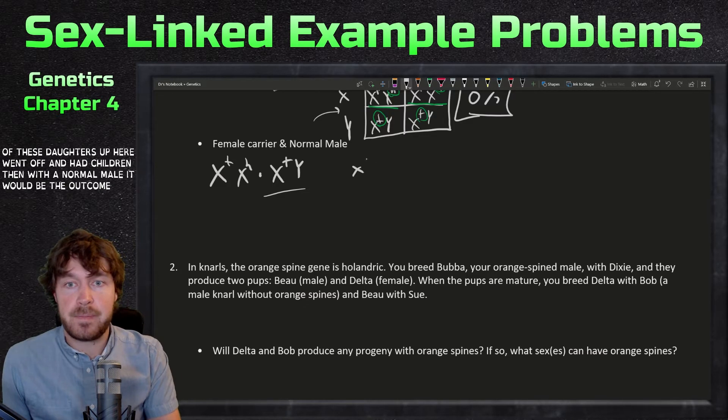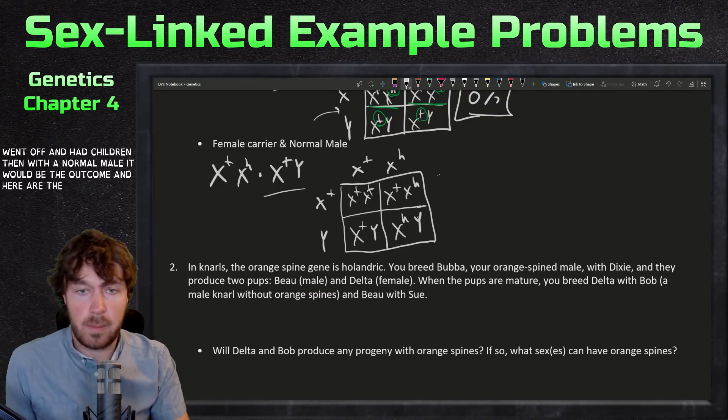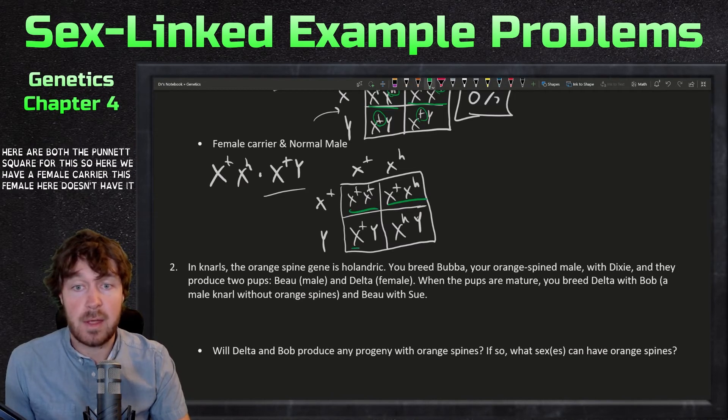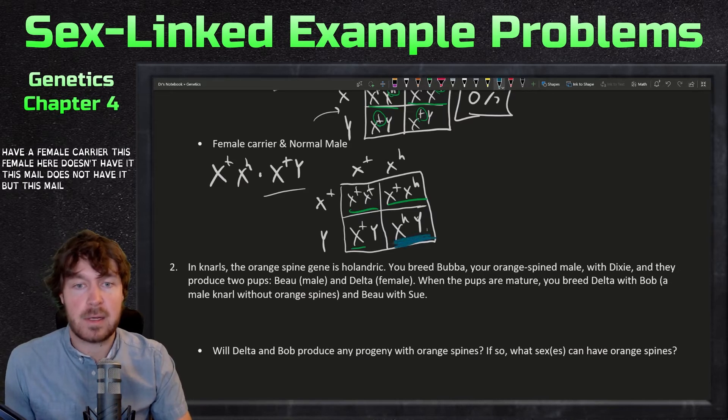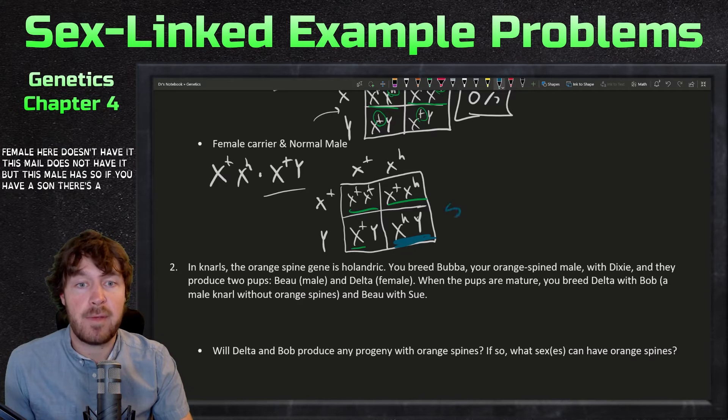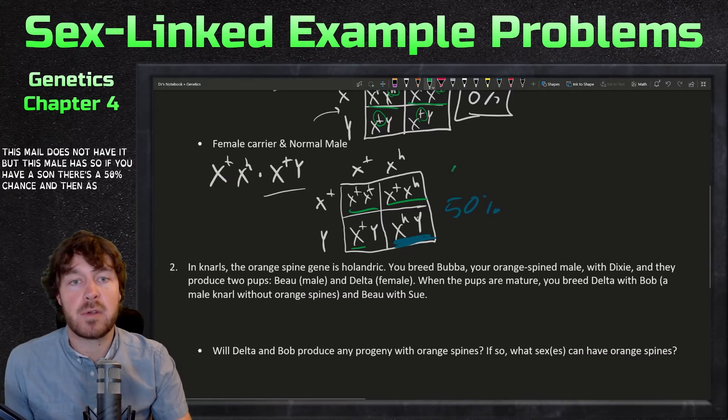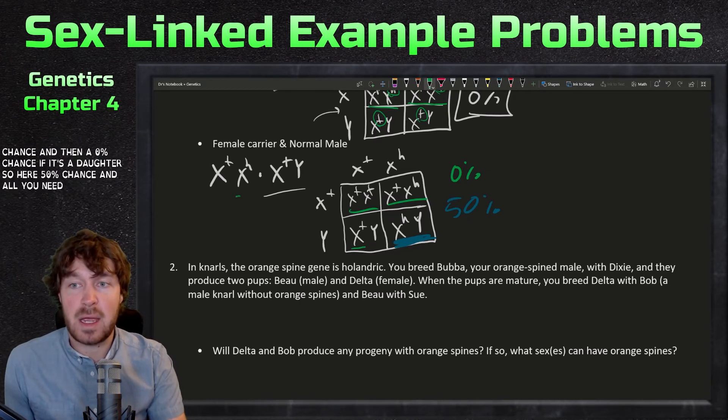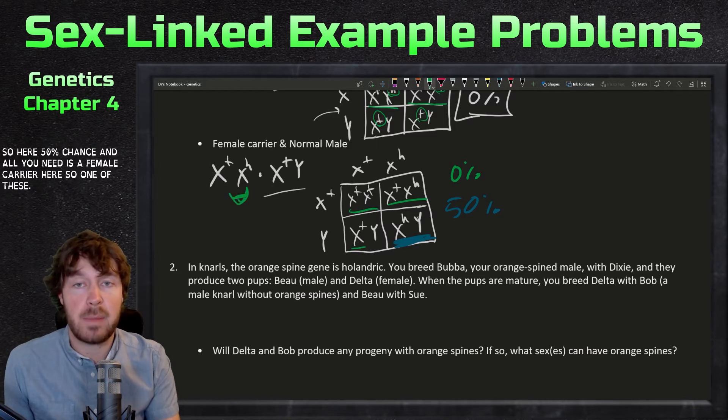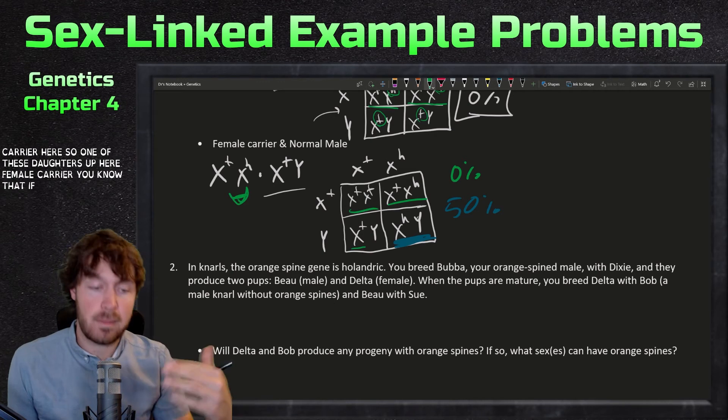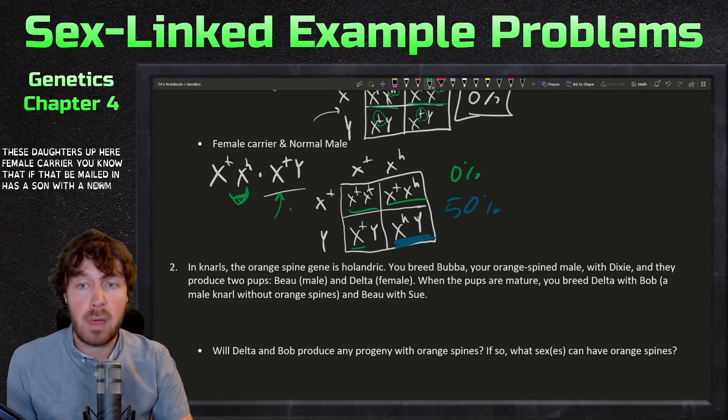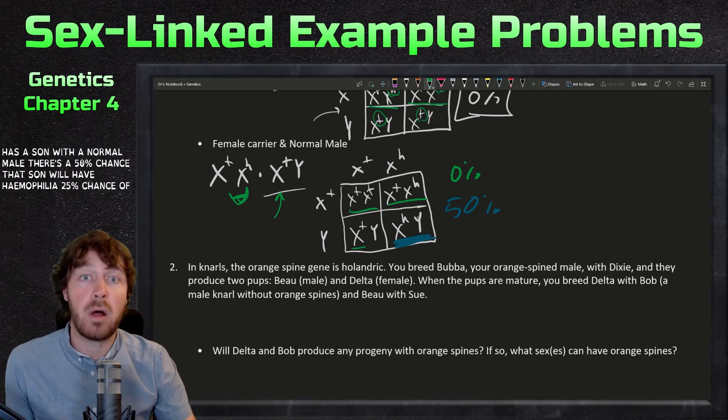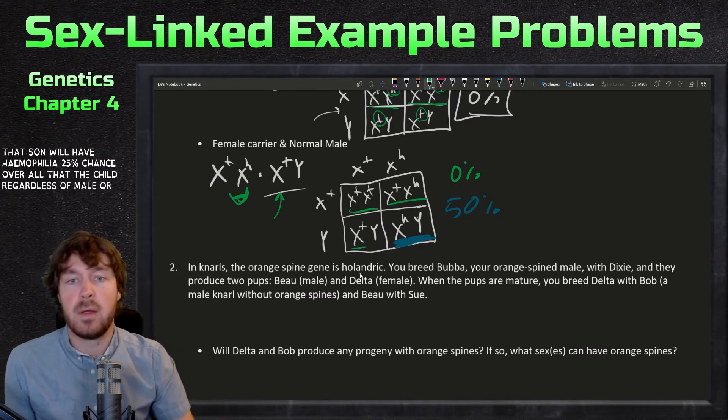Here would be the outcome, and here's the Punnett square for this. We have a female carrier, this female here doesn't have it, this male does not have it, but this male has it. If you have a son, there's a 50% chance, and then a zero percent chance if it's a daughter. Here, 50% chance. All you need is a female carrier here. One of these daughters up here, female carrier, you know that if that female then has a son with a normal male, there's a 50% chance that son will have hemophilia, 25% chance overall that the child, regardless of male or female, will have it.